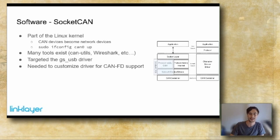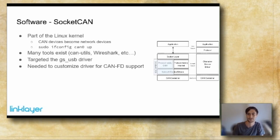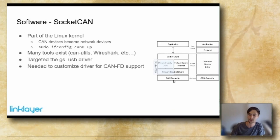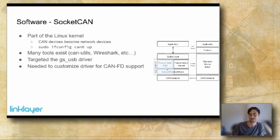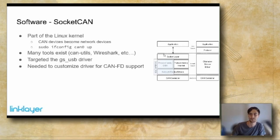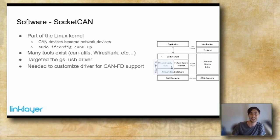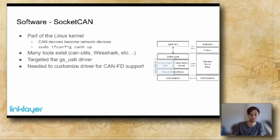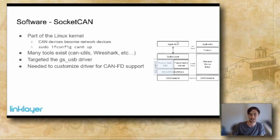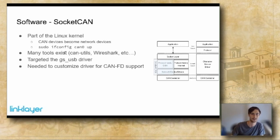Unfortunately, the GS USB driver doesn't support CANFD, so I needed to customize it, which still requires building a custom driver if you want CANFD support. SocketCAN sits as middleware: the hardware (CAN controller and CAN-to-USB device) is at the bottom, then the network device driver and the PF_CAN protocol family — which works much like any other socket: PF_IPV4, PF_IPV6, and there's also PF_CAN. At the top you have your application, whether that's CANutils, Wireshark, or something you write yourself.